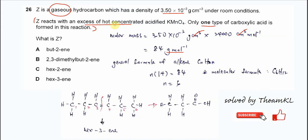Because it's telling us that it reacts with excess hot concentrated acidified KMnO4, this is telling us that it's an alkene because the alkene double bonds will break and it forms different products. So we need to use the general formula of alkene which is CnH2n to get this carbon number.